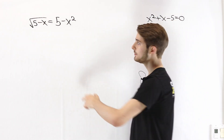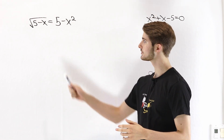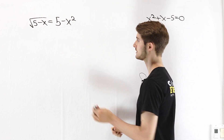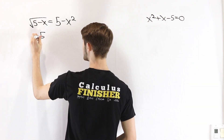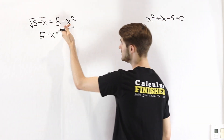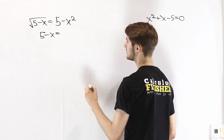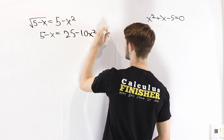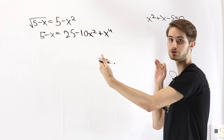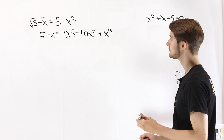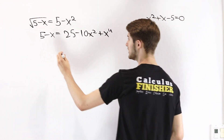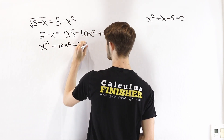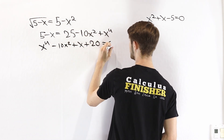Going back to the original equation, it'll be difficult to find solutions with the square root still there, so let's start by squaring both sides. That gives 5 minus x equals 25 minus 10x squared plus x to the fourth. Moving everything to one side gives x to the fourth minus 10x squared plus x plus 20 equals zero.